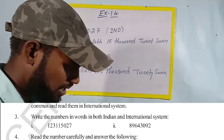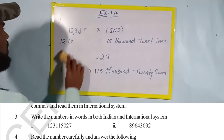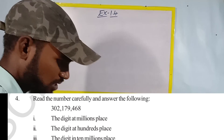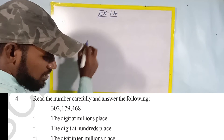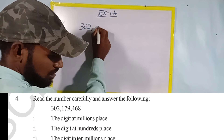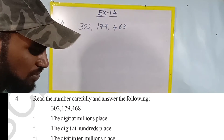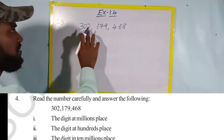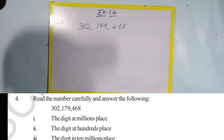The fourth bit says: read the number carefully and answer the following questions. The number given is 302,179,468. Let's read it once — ones, tens, hundreds, thousands, ten thousands, hundred thousands, millions, ten millions, hundred millions. Answer: three hundred and two million, one hundred and seventy-nine thousand, four hundred and sixty-eight.